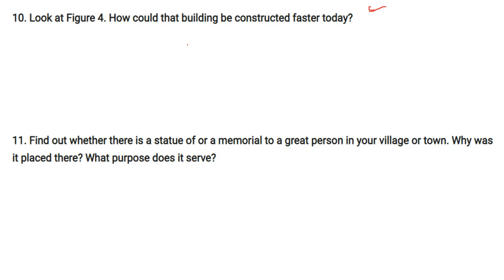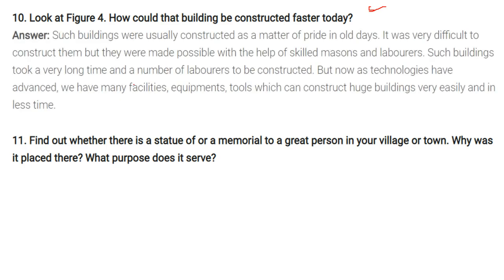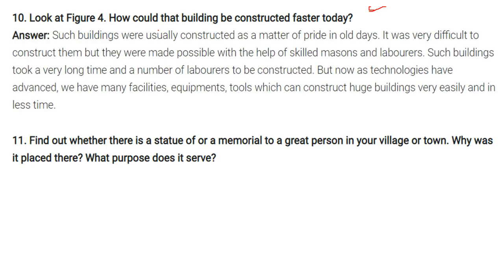Question: How could that building be constructed faster today? Such buildings were usually constructed as a matter of pride in old days. It was very difficult, but made possible with the help of skilled masons, labourers, and the will of the king. Such buildings took a very long time and a large number of labourers. But now, as technology has advanced, we have many facilities, good equipment, and tools which can construct huge buildings very easily and quickly.